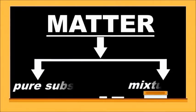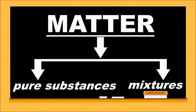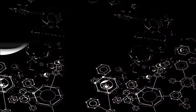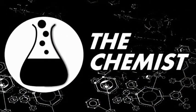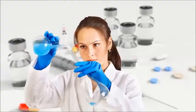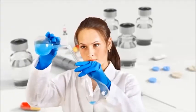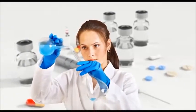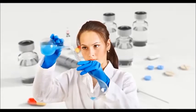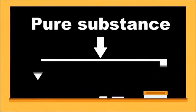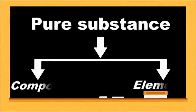Stick to this video to find out the difference between pure substances and mixtures, with examples. Basically, a pure substance is a form of matter that has a constant chemical composition and characteristic properties. Substances can either be a compound or an element.